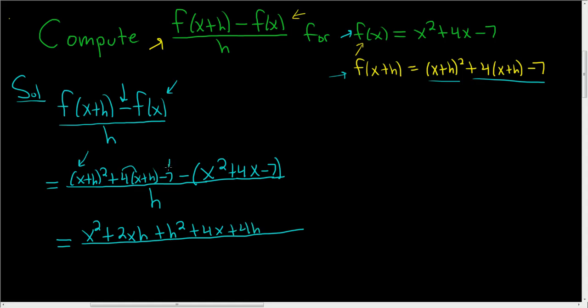And we still have the minus 7. Very easy to mess up here. And then we have to distribute this minus sign. So minus x squared minus 4x. And then negative and negative is positive, so we get a positive 7. And it's all being divided by h.